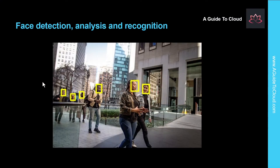The next one is face detection, analysis, and recognition. Face detection is a specialized form of object detection that locates human faces in an image. This can be combined with classification and facial geometry analysis techniques to infer details such as age and emotional state, and even recognize individuals based on their facial features.